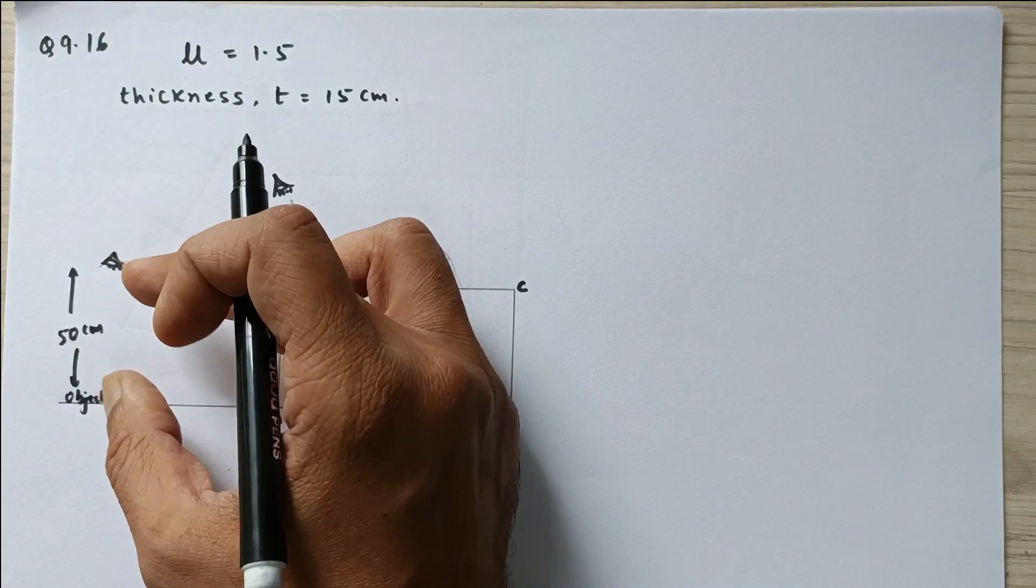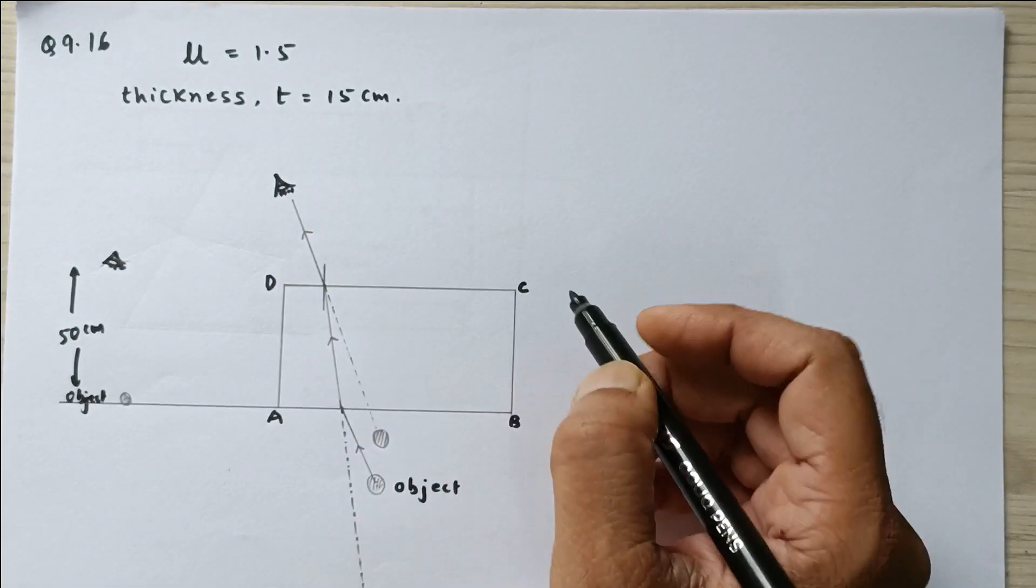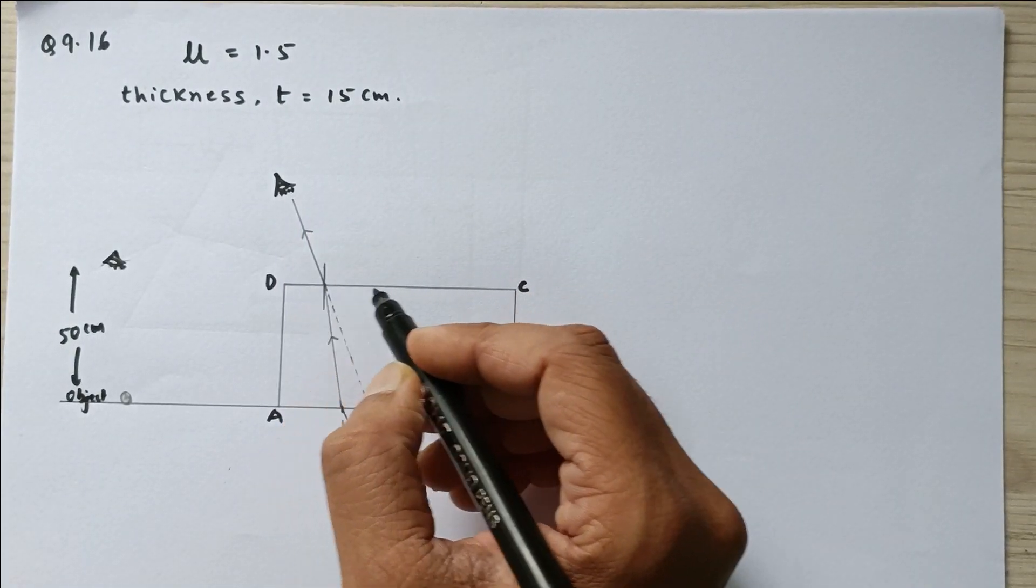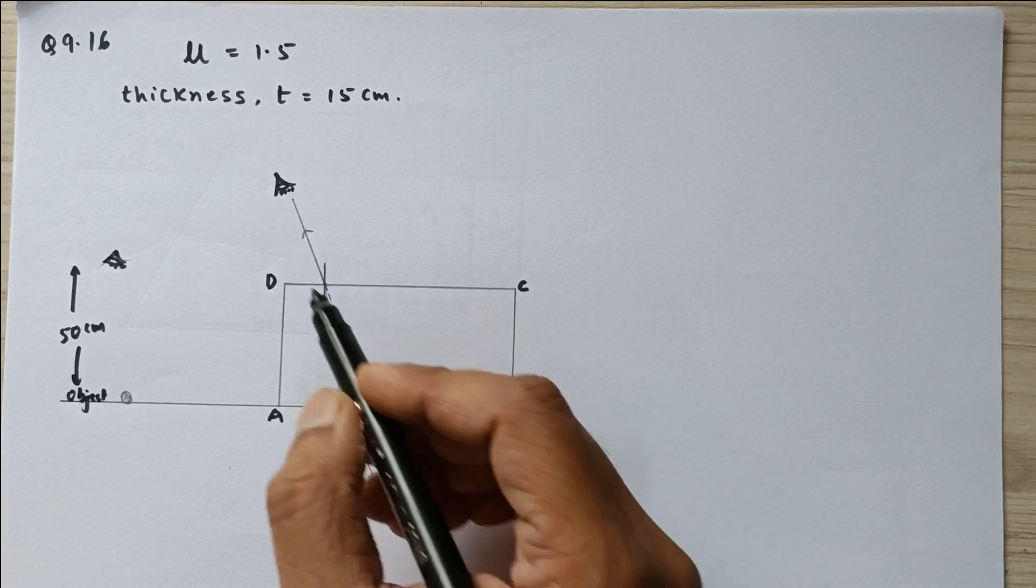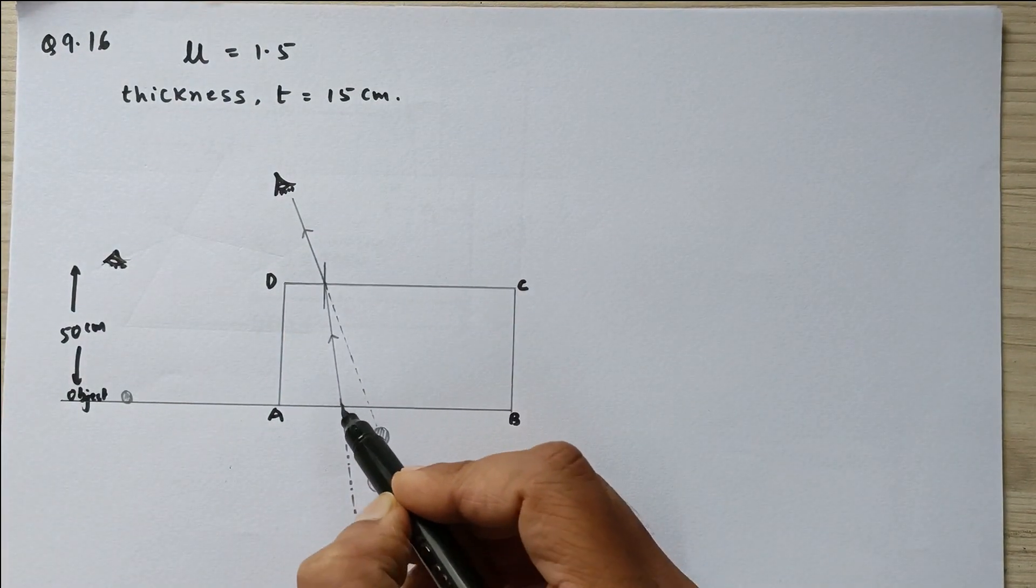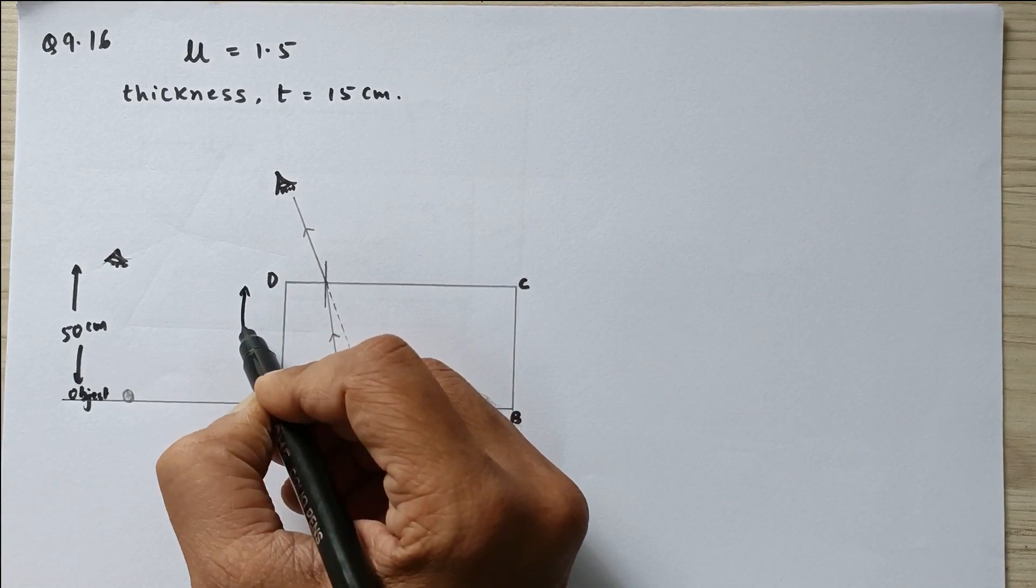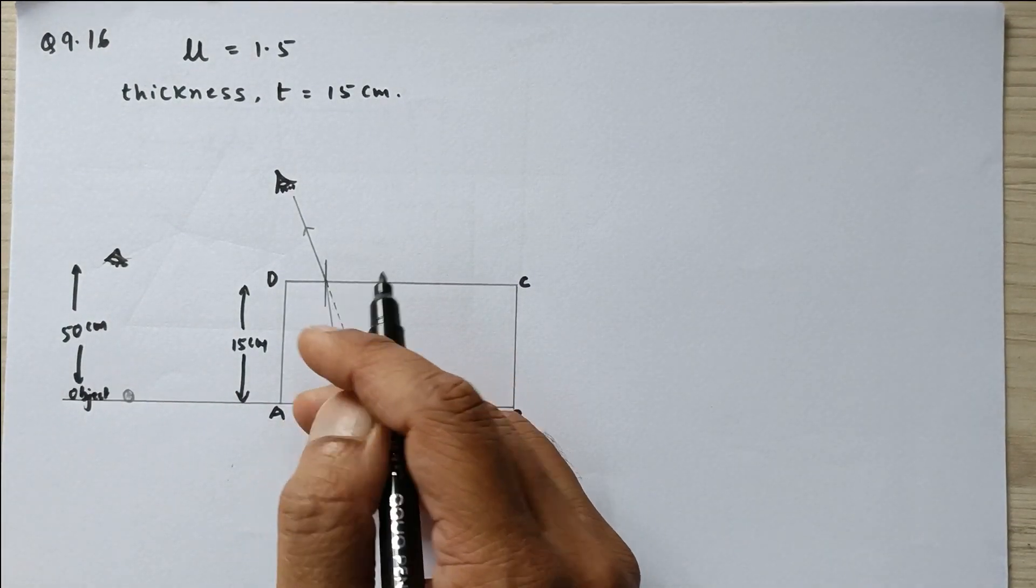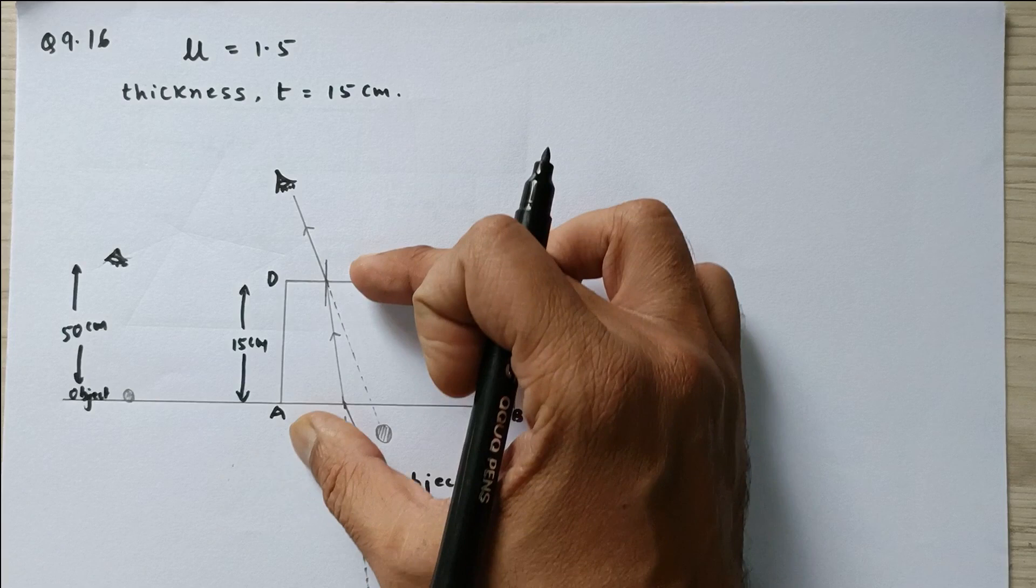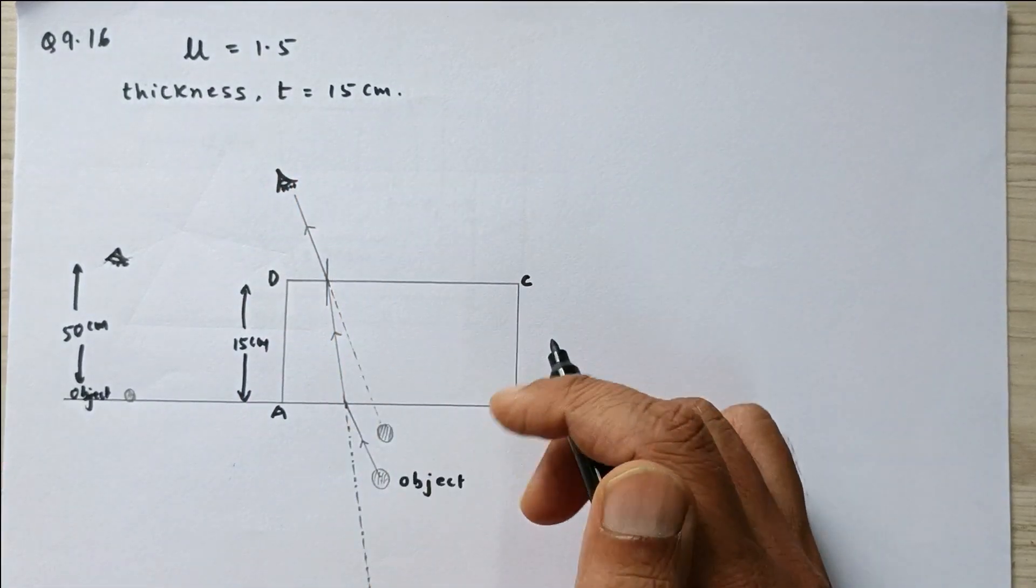Now if we keep a glass slab of thickness 15 centimeters, you have to understand that the thickness is the perpendicular distance between those two surfaces through which the light travels. So the light actually passes from the object, crosses this surface and this surface, that is why this distance of 15 centimeters would be the thickness. It is not the actual thickness of the glass slab, it is the perpendicular distance between two surfaces through which the light passes.